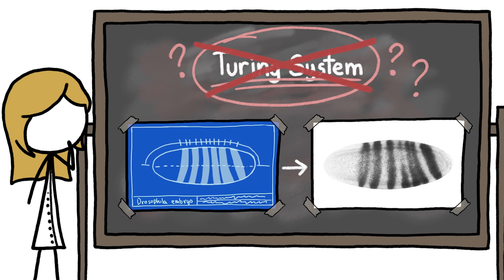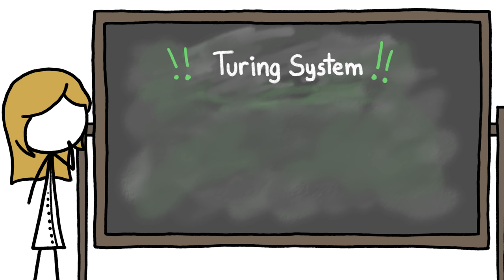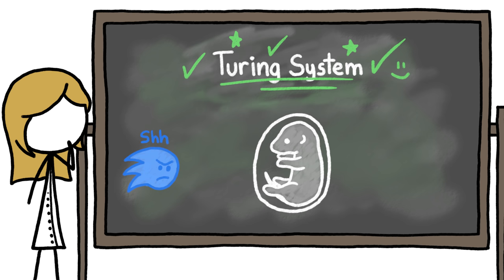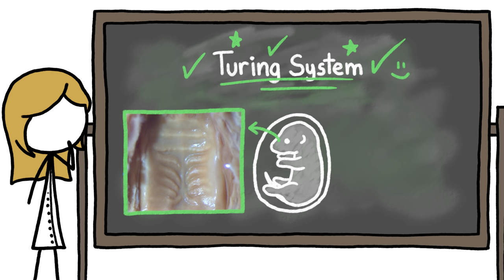But on the other hand, we've also come across some tantalizingly Turing-like systems. In developing mice, for example, a protein called sonic hedgehog inhibits another activator protein with a less awesome name, producing stripy ridges on the roof of the embryo's mouth. And in its nubby limb ends, three different proteins activate and inhibit tissue growth to generate the stripe-like appendages known as digits.